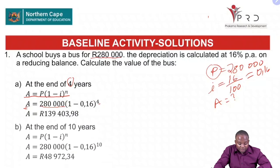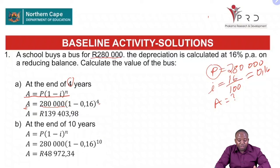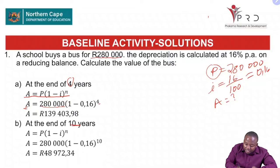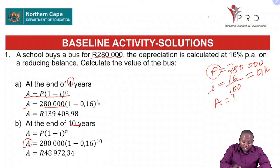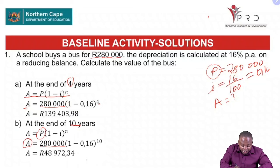Now let's look at number B. We are still calculating the value of the bus, but after 10 years — we want to find out how much the bus would cost if we sell it after 10 years. The book value after 10 years: A equals 280,000 times (1 minus 0.16) raised to the power 10. We get A equals 48,972.